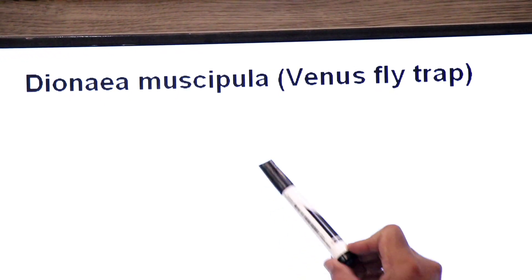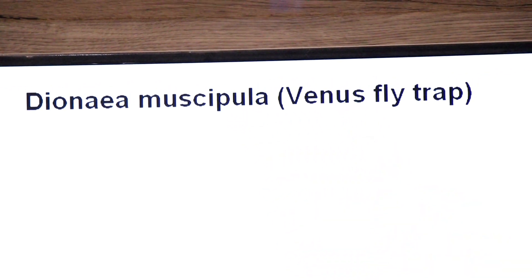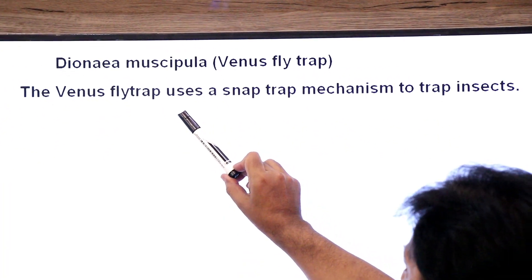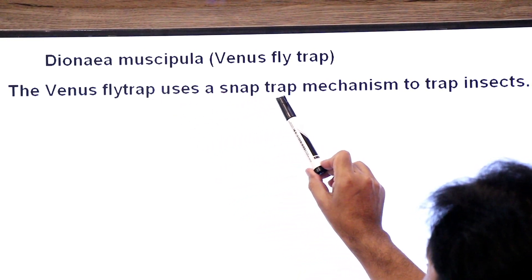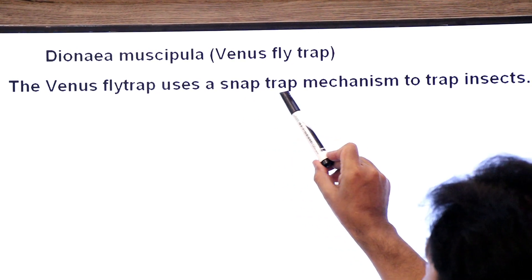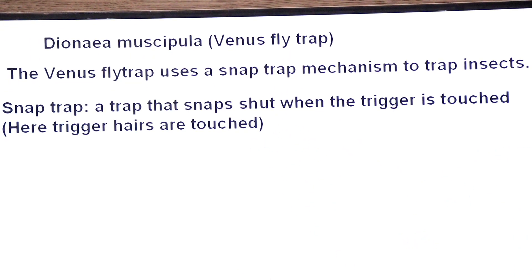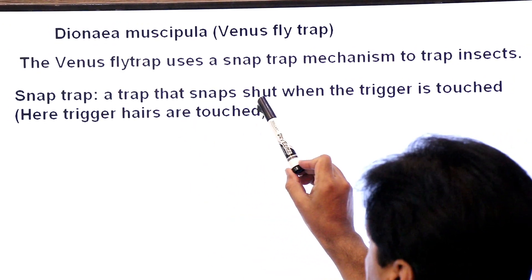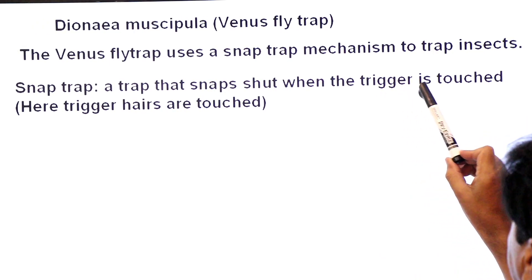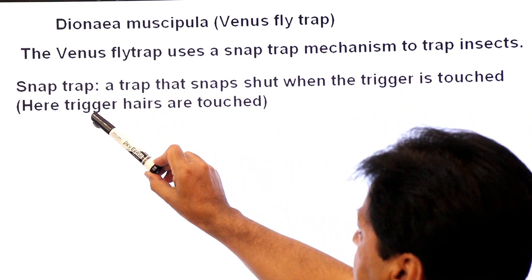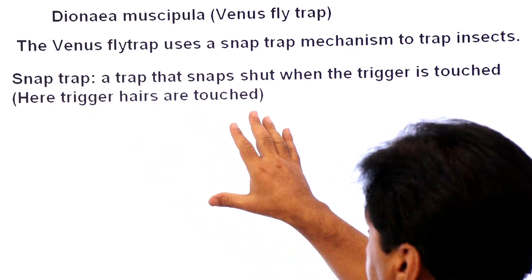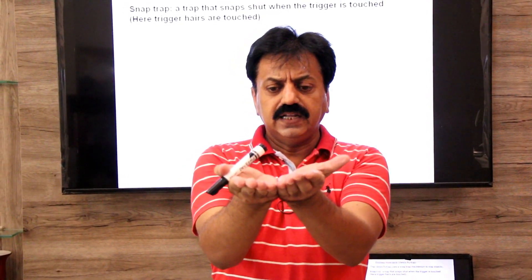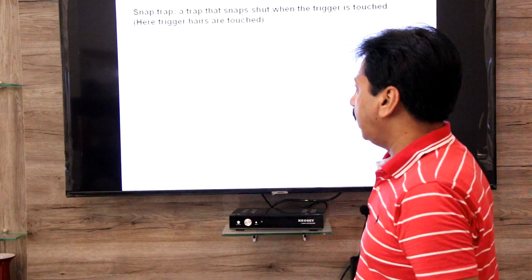Dionaea muscipula, known as the Venus fly trap, uses a snap trap mechanism to trap insects. A snap trap is a trap that snaps shut when a trigger is touched. Here, the trigger refers to trigger hairs found on the leaves — sensitive hairs. When an insect touches those trigger hairs, the two lobes of the lamina snap shut.